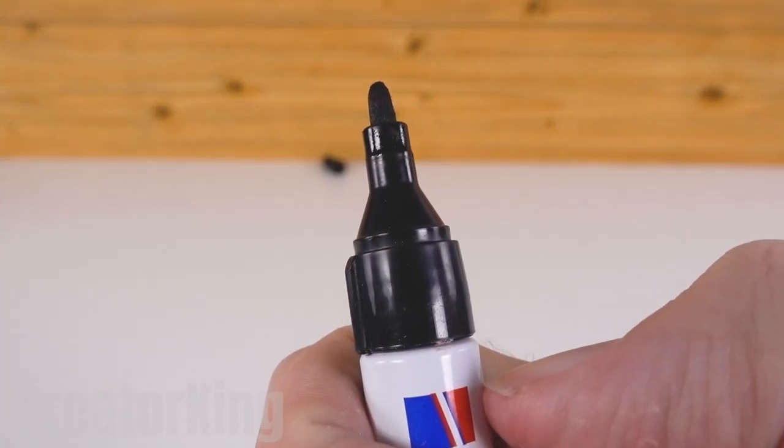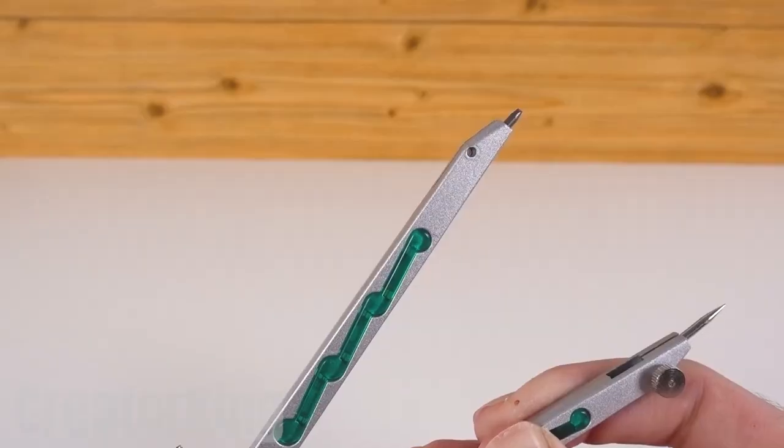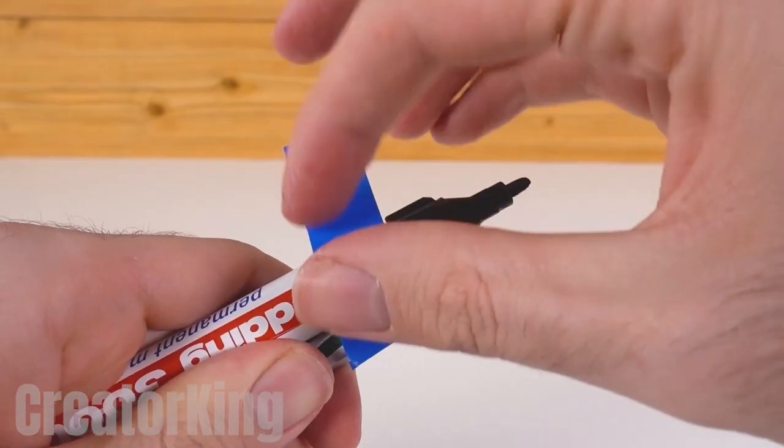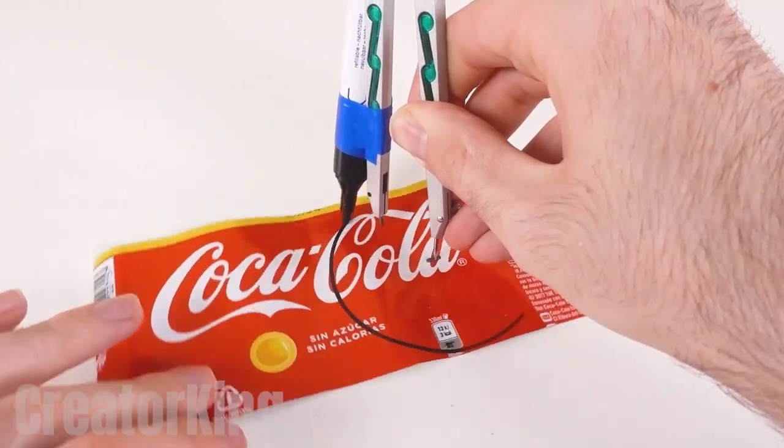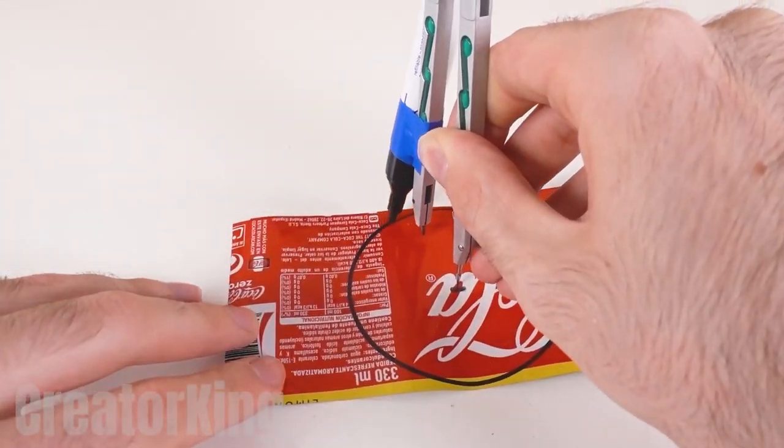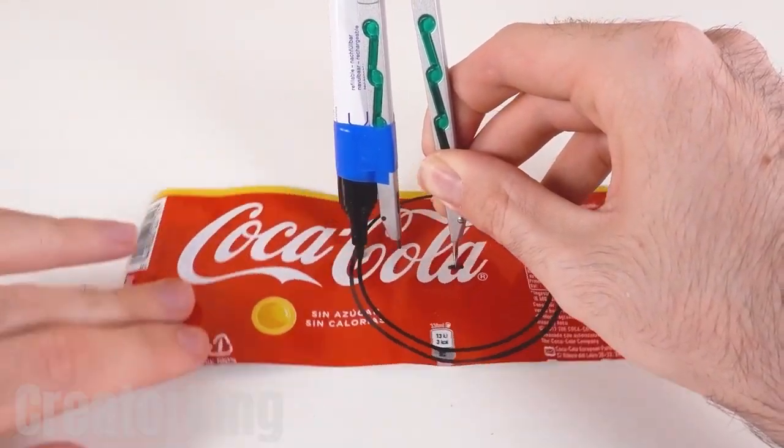Then measure the width of the sheet, which should be about 8 cm. Attach a permanent marker to a compass with a bit of tape. With the compass at 4 cm, start making a circle on the sheet followed by a smaller one inside the first circle.